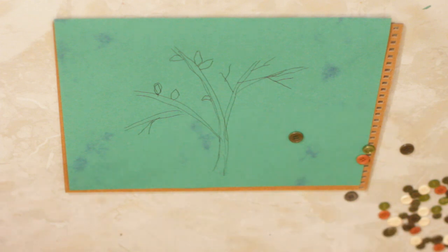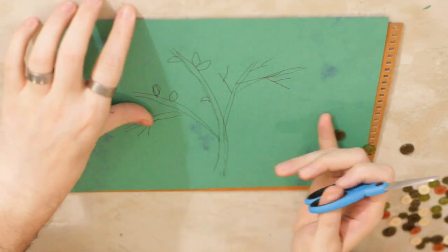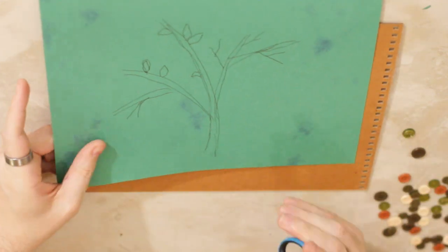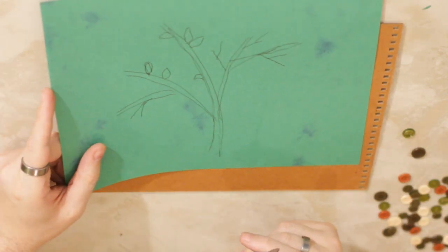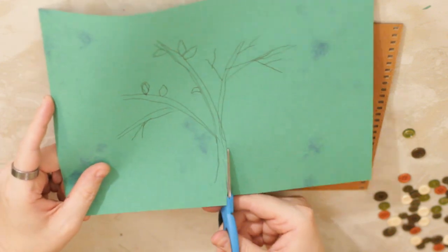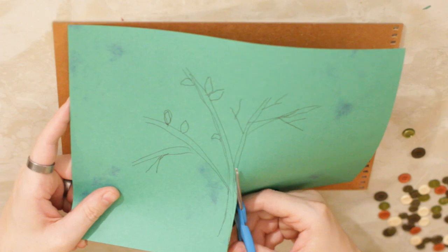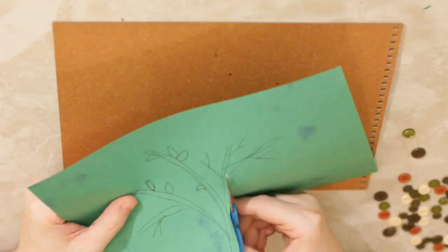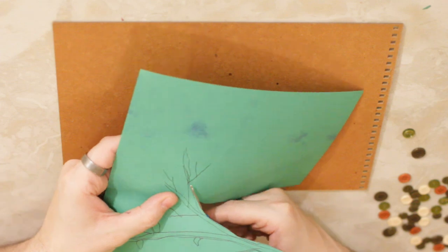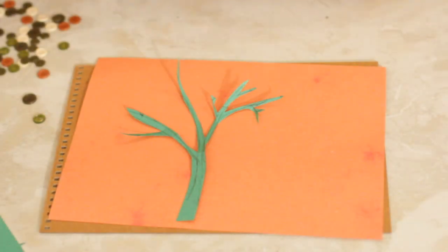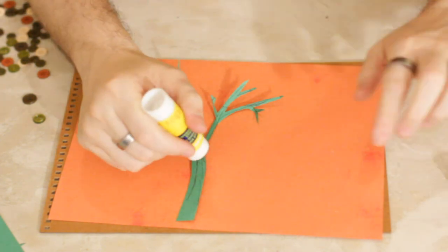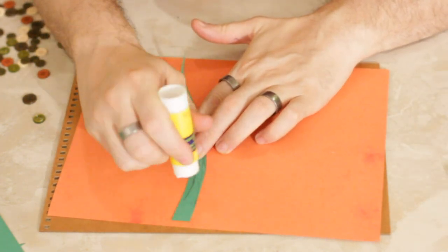So here's what we're gonna do. If I can find my scissors, there they are, trusty safety scissors. We're gonna cut out the basic plant complete with all the branches.